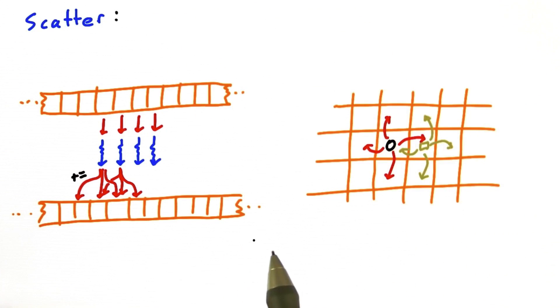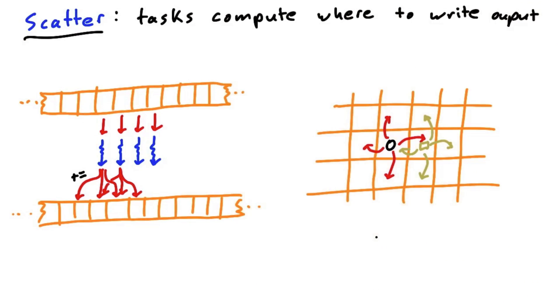When each parallel task needs to write its result in a different place, or in multiple places, we call this scatter, because the threads are scattering the results over memory.